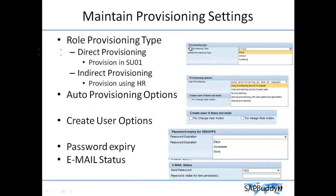The first one is provisioning type — here we have role provisioning type with two options: direct provisioning and indirect provisioning. Direct provisioning means using SU01 you create a user and assign roles to the user. Indirect provisioning means using HR management you can do provisioning in the SAP system. SAP GRC also provides combined provisioning — some requests via SU01 and some via SAP HR.